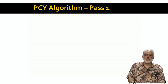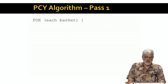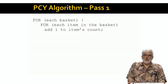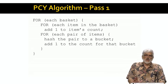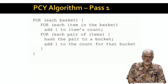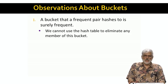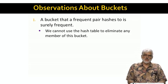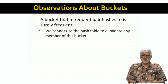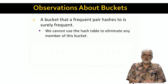Here's the pseudocode for the first pass of the PCY algorithm. We read each basket once, look at each item and add one to its count — that's just what A Priori does. The additional work on the first pass of PCY is we look at each pair of items, hash the pair to some bucket, and increment the count for that bucket. Two important observations: first, if a pair is frequent, then the bucket it hashes to is surely frequent. Thus on the second pass, the bit in the bitmap for that bucket will be one, and we will surely maintain a count for this pair.